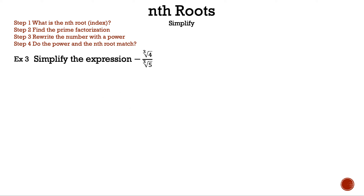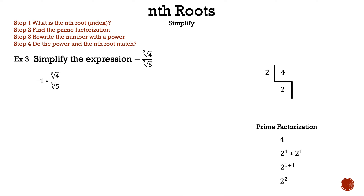Let's move on to example three. Simplify the expression: the negative of the cube root of four over the cube root of five. First, let's write down negative one times the cube root of four over the cube root of five. Now let's find the prime factorization of four and five. Five is already a prime number, and we already know the prime factorization of four from example one, which is two squared. Let's rearrange four as two squared and five as five to the first.